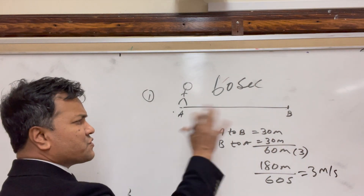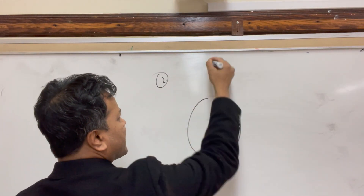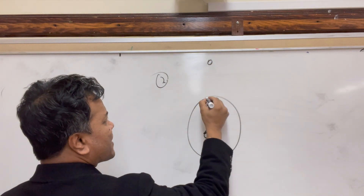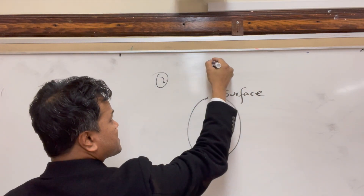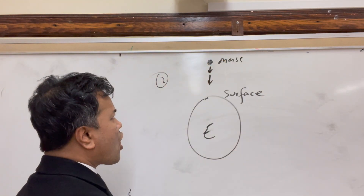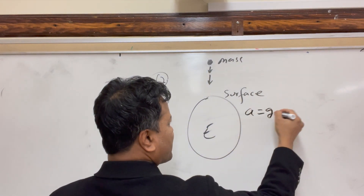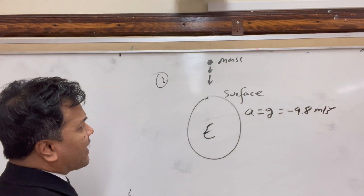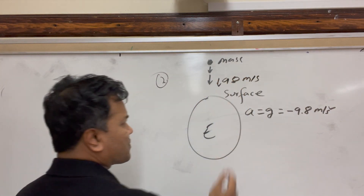Problem two: an object falls near the Earth's surface. Anything that falls near our surface has acceleration due to gravity of negative 9.8 meters per second squared. At some point its velocity is 98 meters per second downward — of course the velocity is down when something falls.